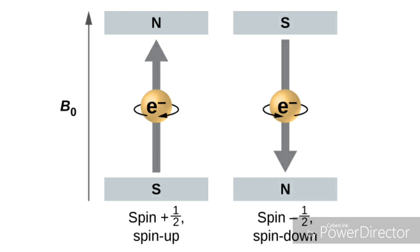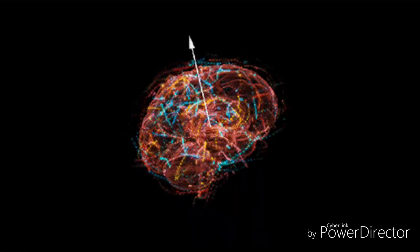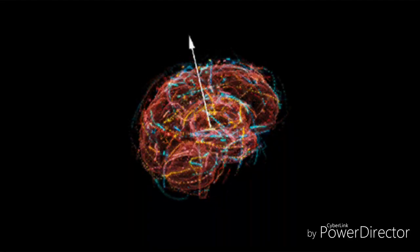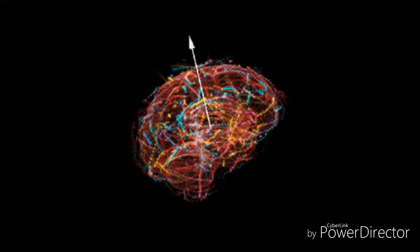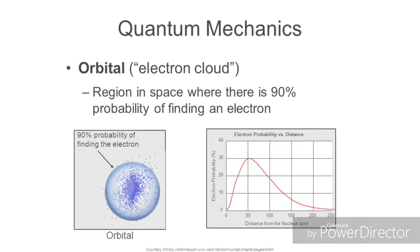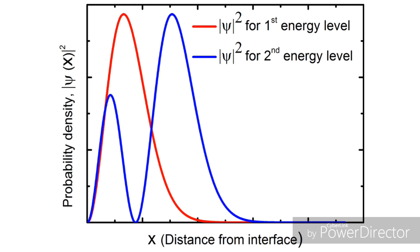When you are not measuring where the electron is, it remains in the superposition state — it can be in either state. But when you perform a measurement, the electron makes up its mind and goes into one of the two states. Until you measure, the probability of finding the electron is spread across different locations and you cannot know exactly where it will be — you can only tell the probability. The moment you measure, you know very precisely which state it is in.